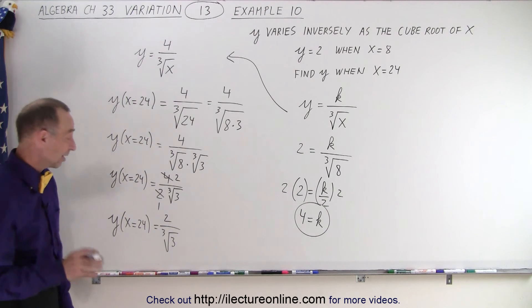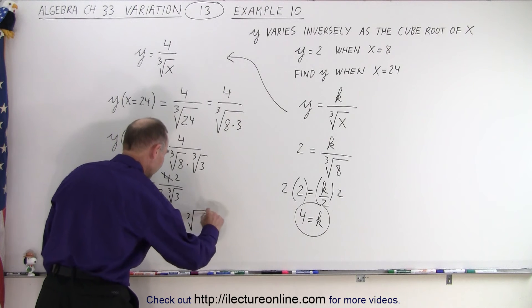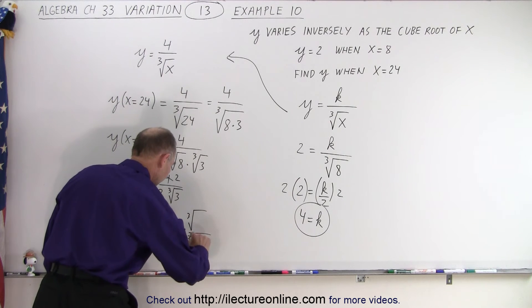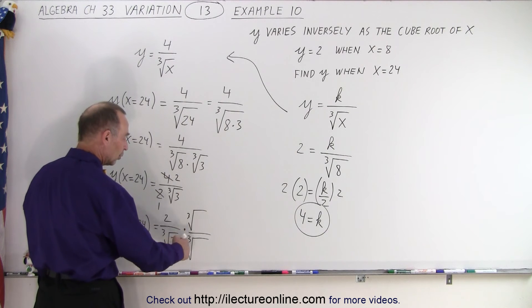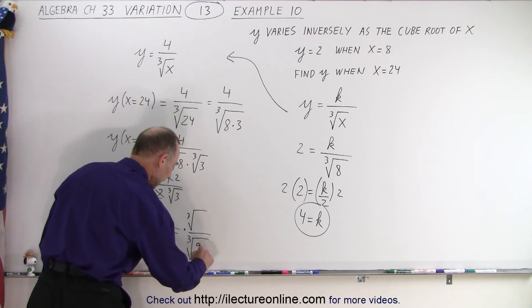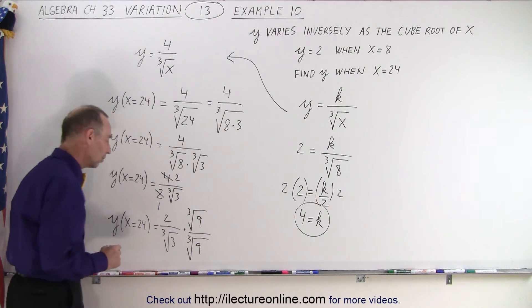So what we want to do is we want to rationalize the denominator. So we're going to multiply both the top and the bottom by the cube root of... And notice what I want here is so that that will no longer be a radical. So I need a 9 and a 9 here, because I need to do the same to the numerator as I do to the denominator.